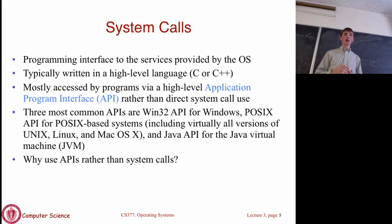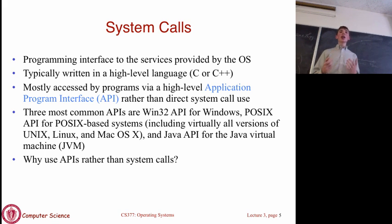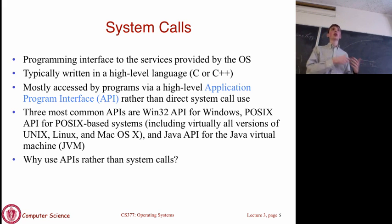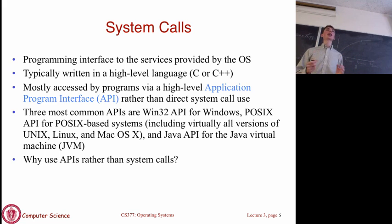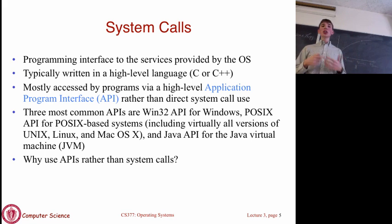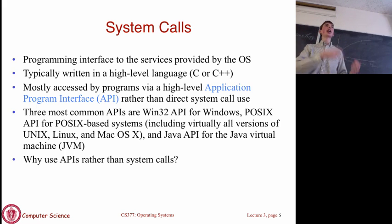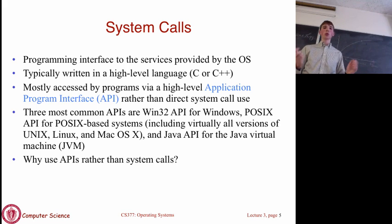Let's switch back to the main topic: system calls. System calls are the interface the OS provides for user programs to make use of OS services—anything from making processes to writing files. Anything a user process is not allowed to do directly because it's protected by the kernel must be done by issuing system calls to the kernel. The kernel takes your request, executes it, and returns either confirmation or the data you asked for.